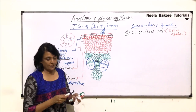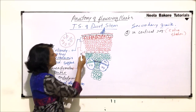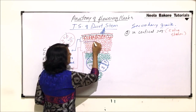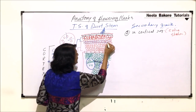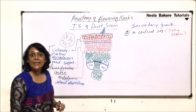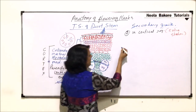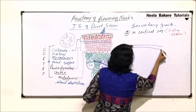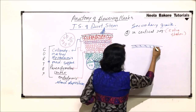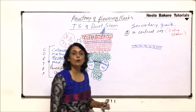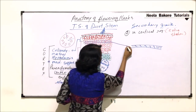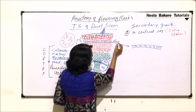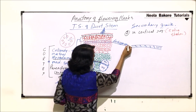In this secondary growth, some cells of the parenchymatous cortex get de-differentiated, and these cells will now form the meristematic zone. That means they will divide to produce new tissue. The parenchymatous cells have undergone a change known as de-differentiation.